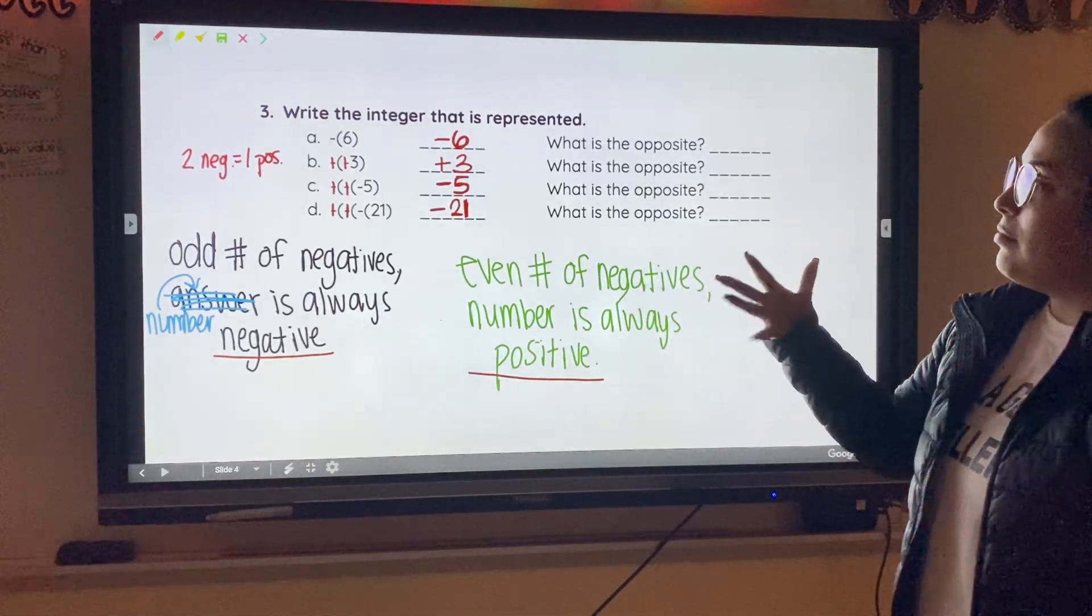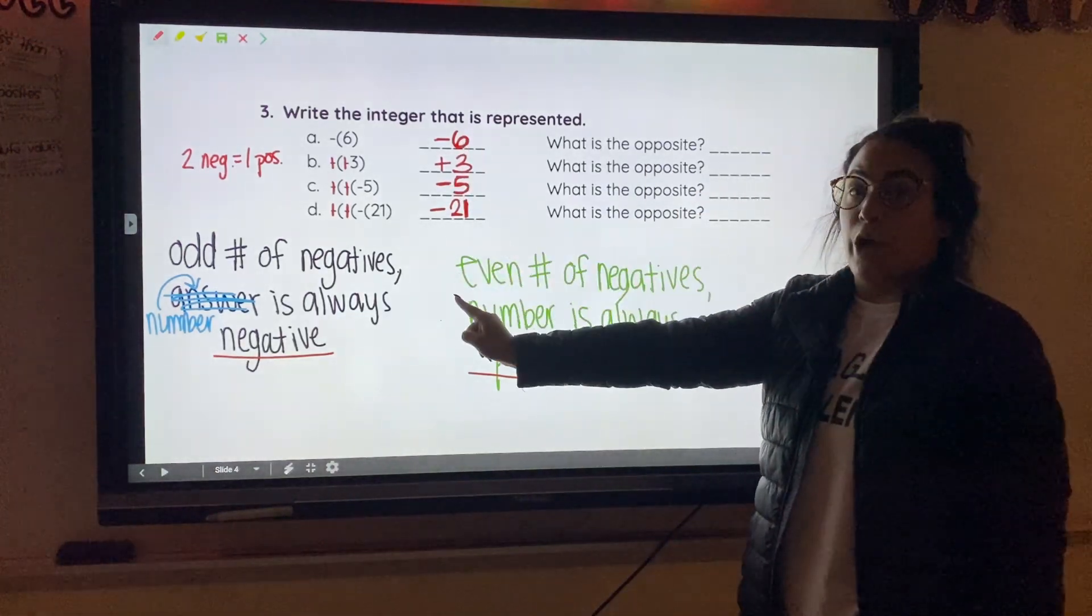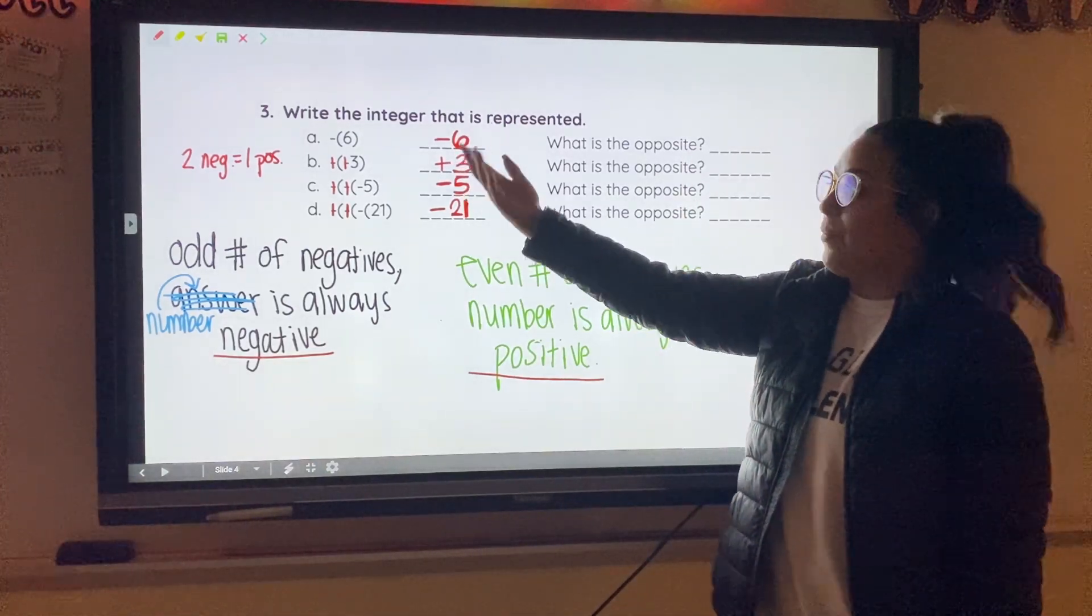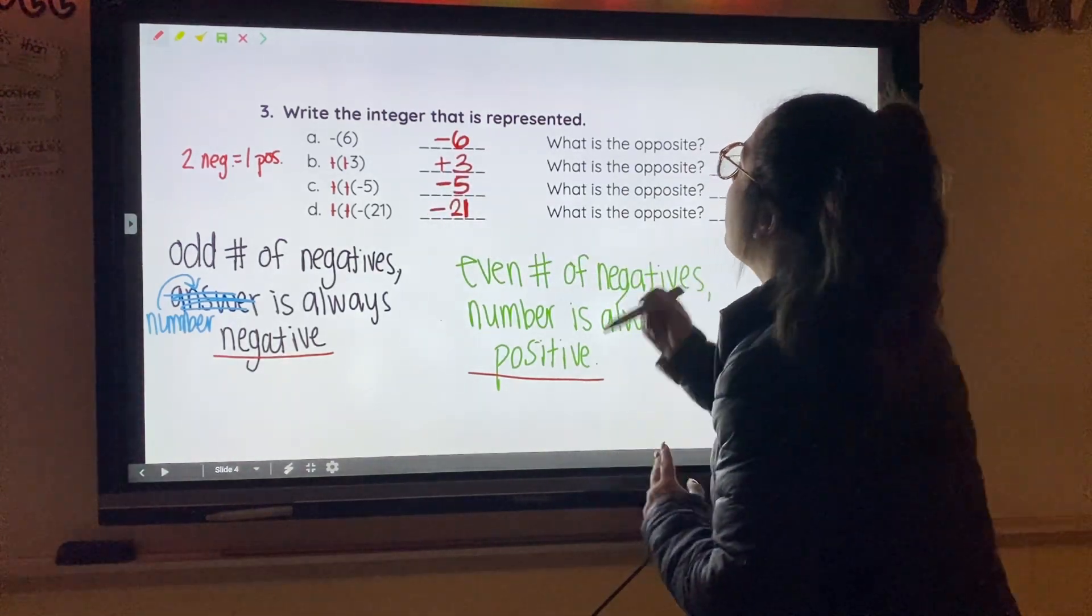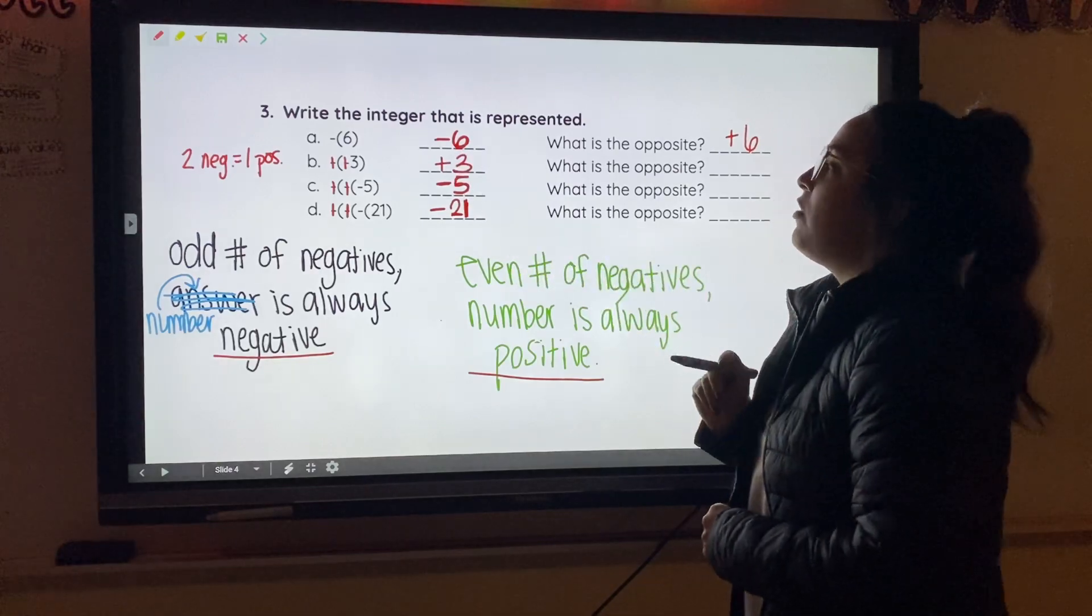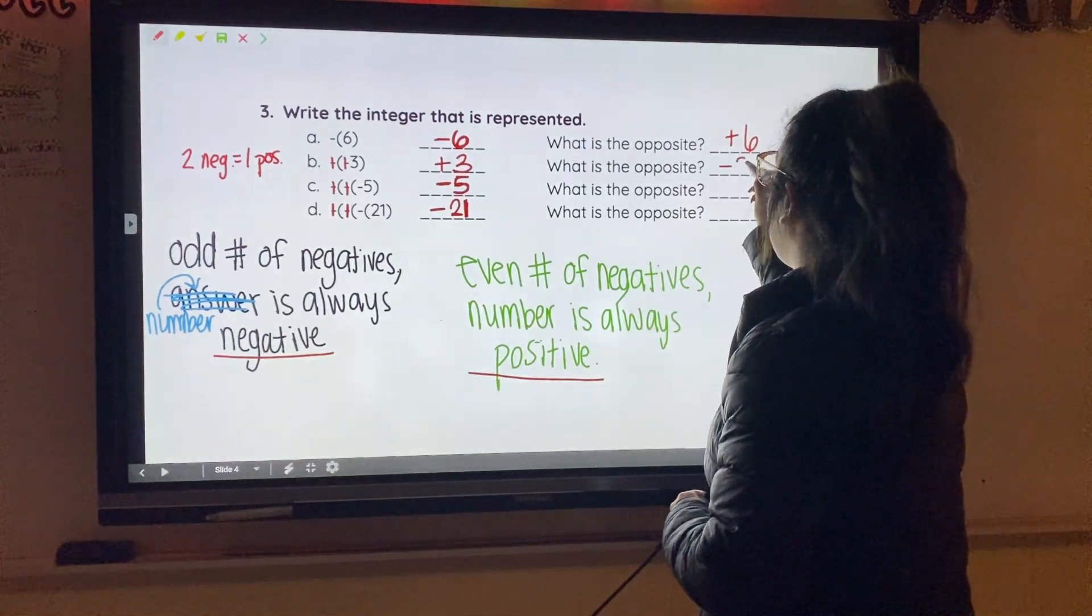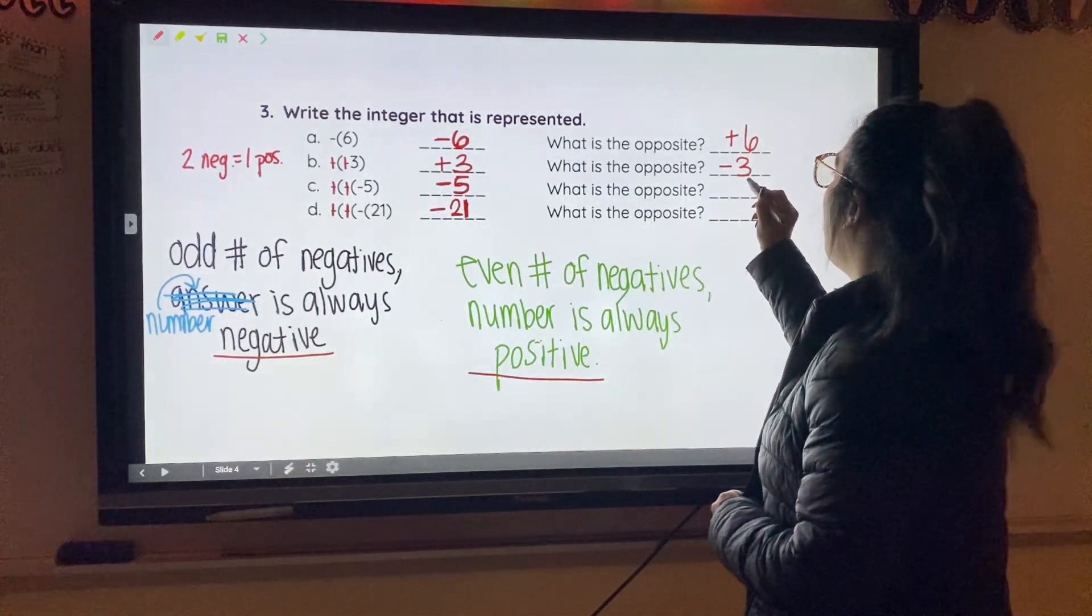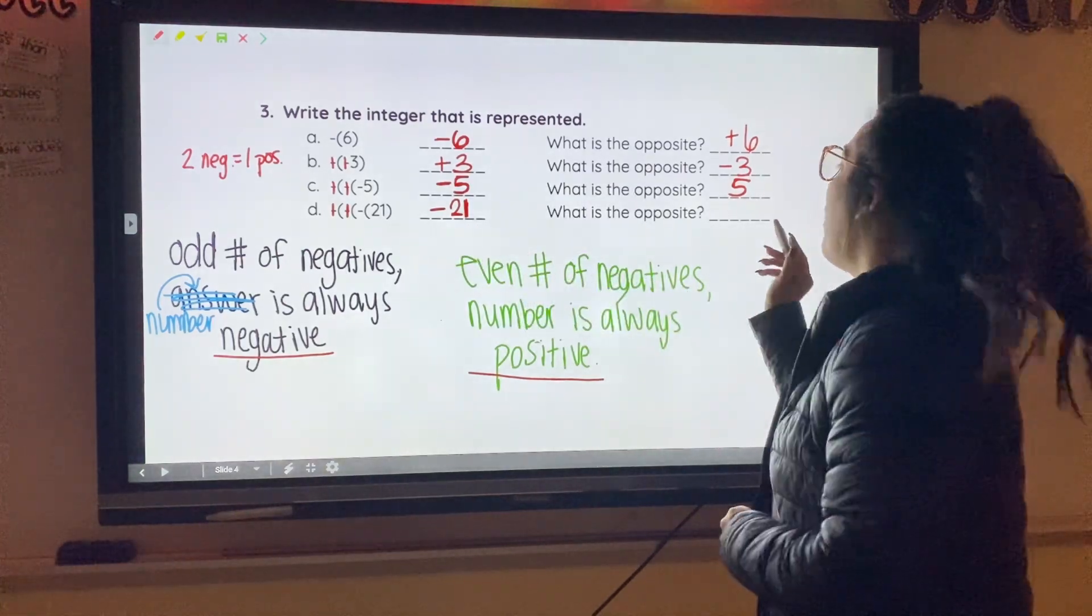So now that I did that little thing, we're going to find the opposite of the numbers we just wrote. So what is the opposite of negative six? Well, if you remember the trick I told you, the opposite of negatives are what? Positive. So the opposite of negative six is positive six. So then I have the opposite of positive three. Well, what's the opposite of positive three? It's going to be negative three. And then the opposite of negative five? Positive five. And then the opposite of negative 21. Positive 21.